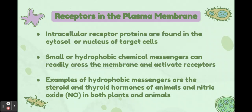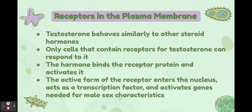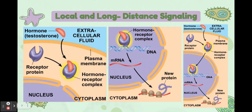Intracellular receptor proteins are found in the cytosol or nucleus of target cells. Small or hydrophobic chemical messengers can readily cross the membrane and activate these receptors. Examples of hydrophobic messengers include steroid and thyroid hormones in animals, and nitric oxide in both plants and animals. Only cells that contain receptors for a hormone like testosterone can respond to it. The hormone binds the receptor protein, activating it, and the active form enters the nucleus, acts as a transcription factor, and activates genes needed for male sex characteristics.